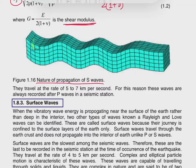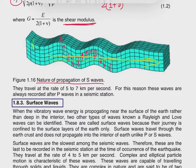Looking at the propagation of S-waves: some particles are moving up, some are moving down, in a pattern of up-down-down-up. The wave is propagating in the horizontal direction, but particles are moving perpendicular to that direction of propagation due to shear action — only due to shear forces are these particles moving perpendicular to the longitudinal axis, which is why they are also called transverse waves.